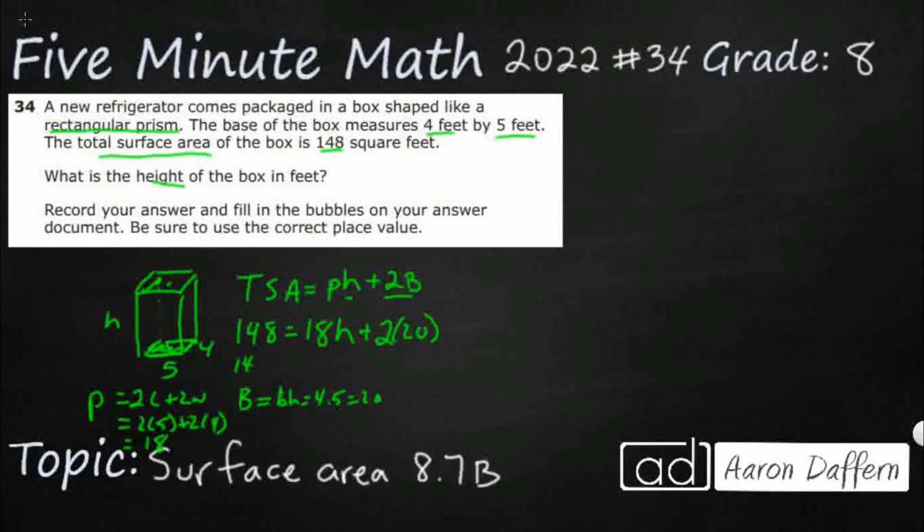So we're going to need to simplify this a little bit. 148 equals 18H plus 40.